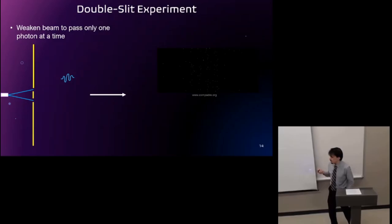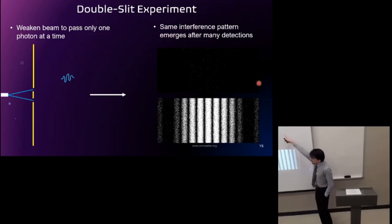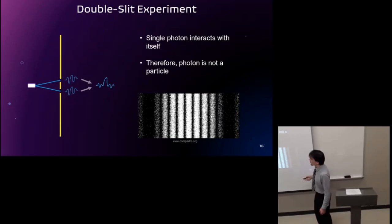Now, he said, what happens if you weaken the beam so that you only send one photon at a time. A photon is the smallest possible amount of light that you can ever have. So if you send one photon at a time through the slits, you still get the same interference pattern. Each one detection just adds up to one spot on the detector. But when you pass it thousands of times, you'll see the same interference pattern. That means that the single photons must be interacting with themselves. Must be waves. A wave nature in a single photon.